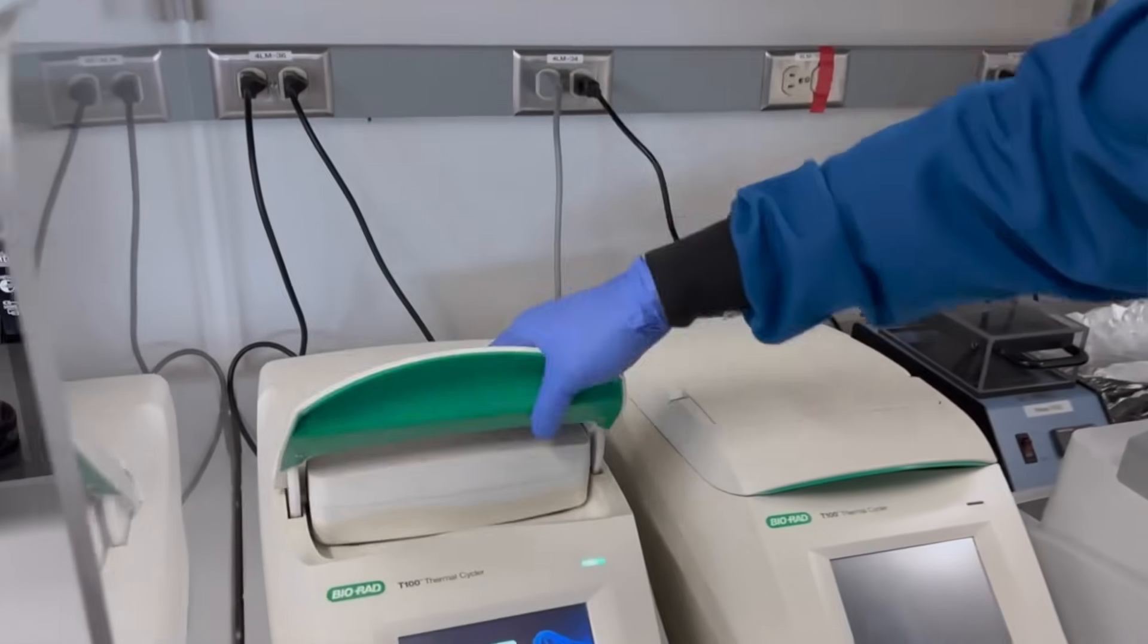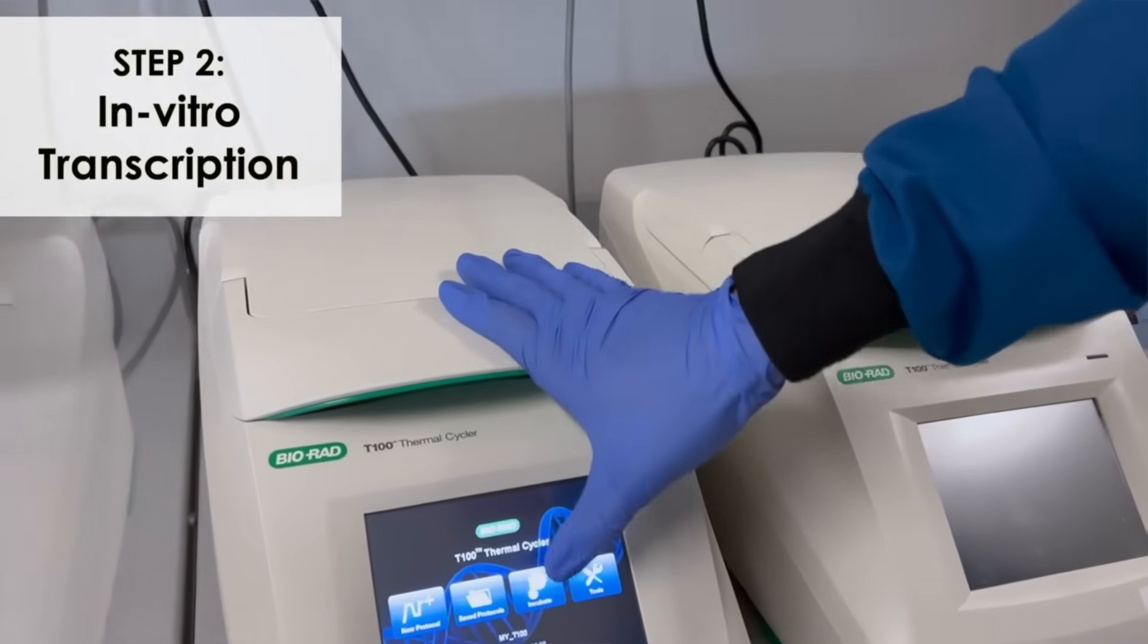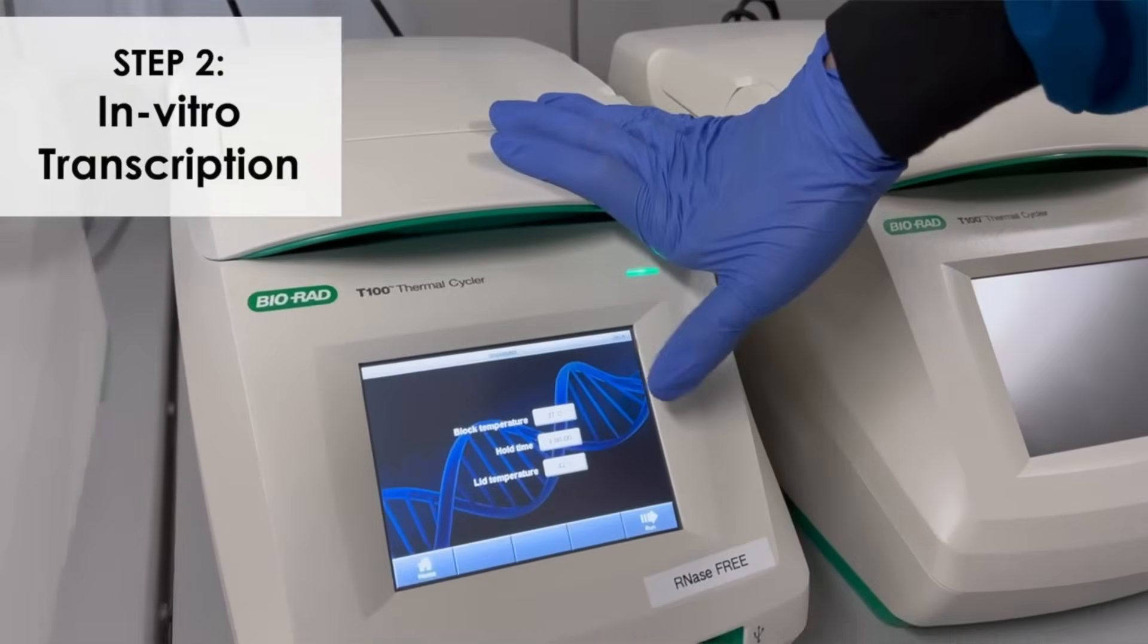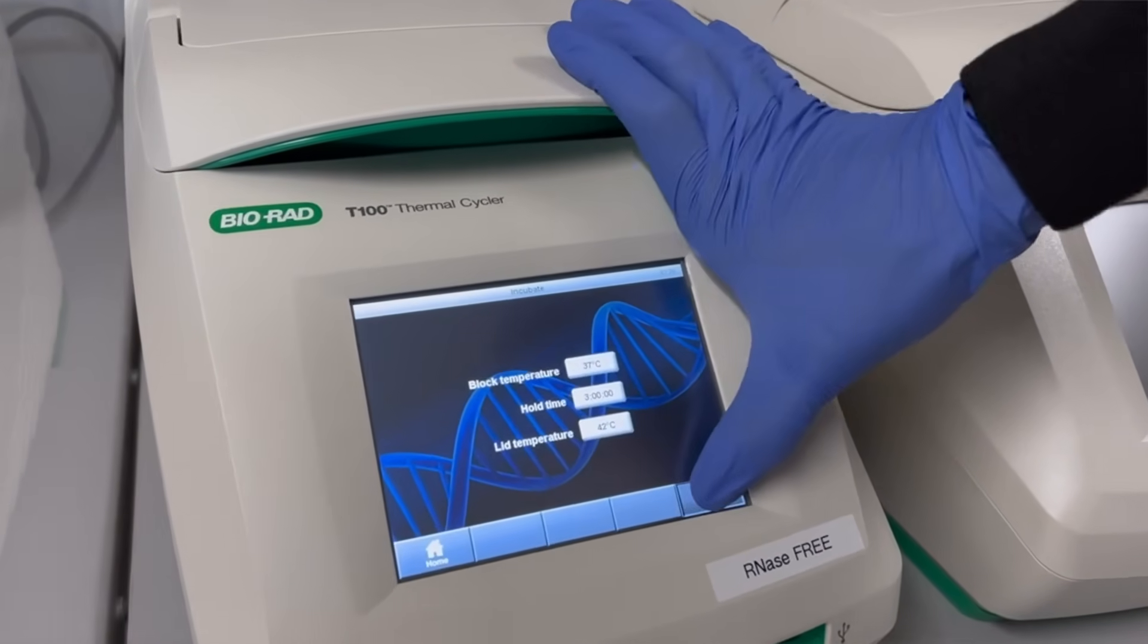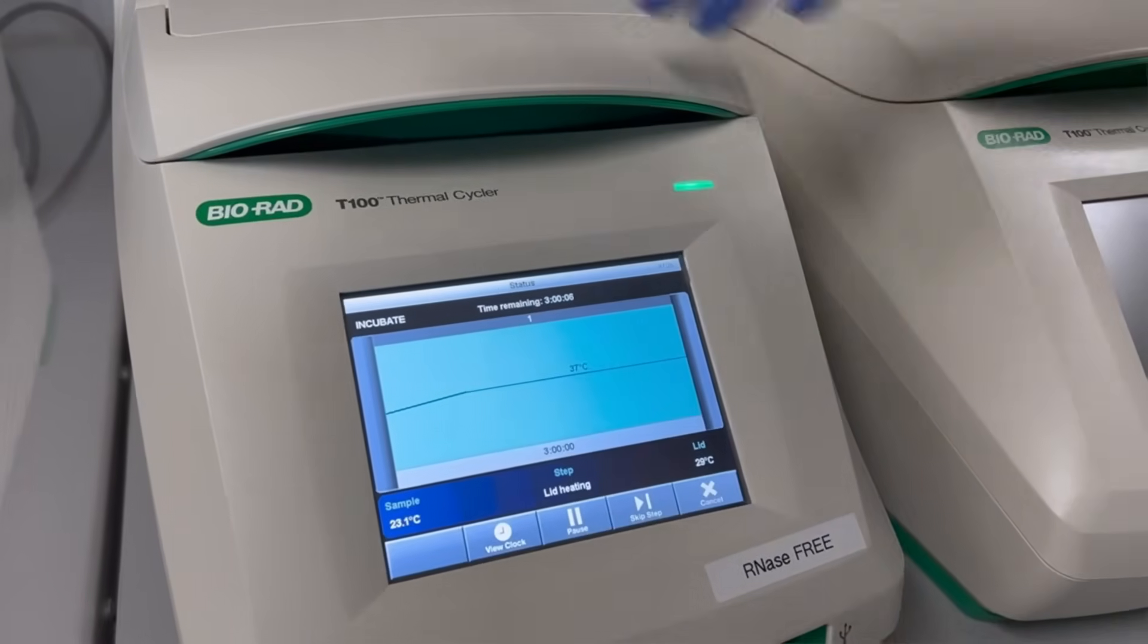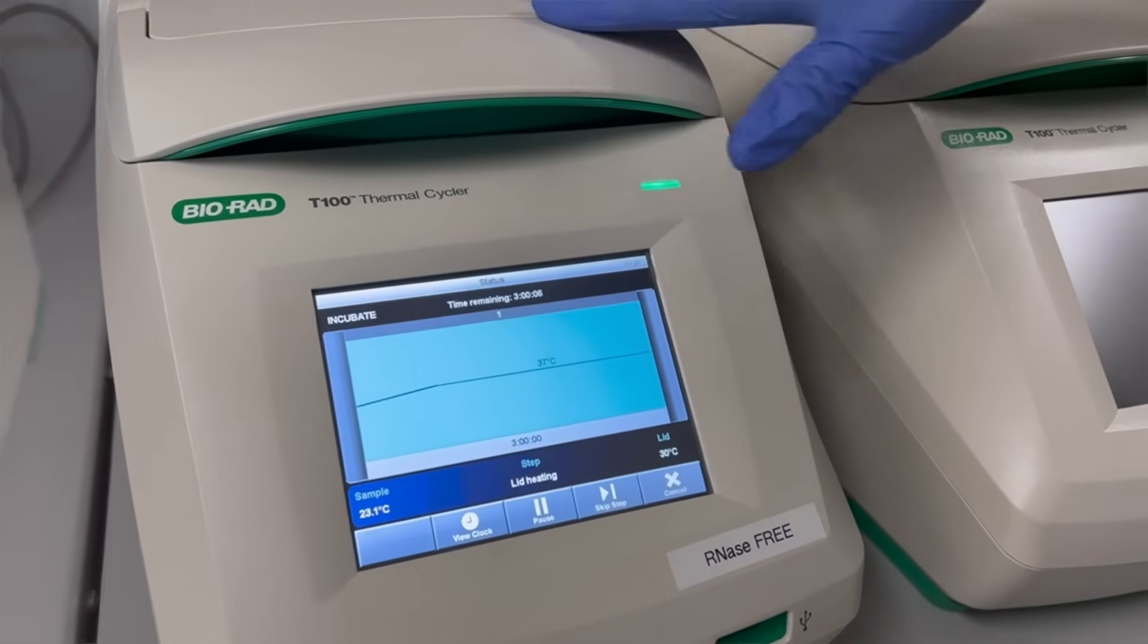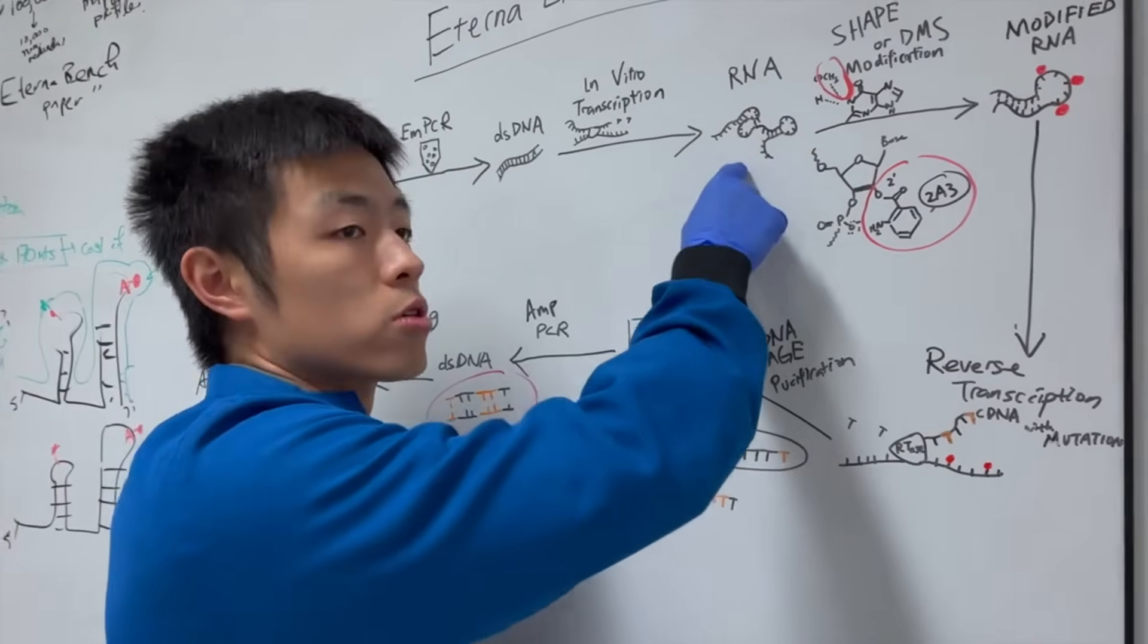We're going to use this double-stranded DNA to do an in vitro transcription. Just like how a body makes RNA, this is done in a test tube. So, we're going to use this double-stranded DNA as a template to generate the RNA. So, we get our RNA molecules.